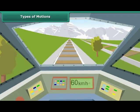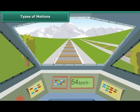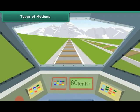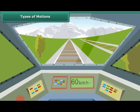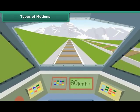Types of Motions. As you know, motion is the change in position of an object with time. The change in its position can be determined through distance measurements. Let us look at the types of motions.